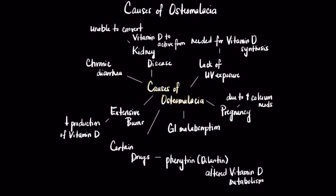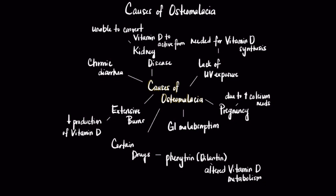Extensive burns can cause osteomalacia since vitamin D is produced in the skin, and any abnormality with regard to the skin can cause osteomalacia. Certain drugs can also cause osteomalacia, such as dilantin, as these medications can interfere with vitamin D metabolism.